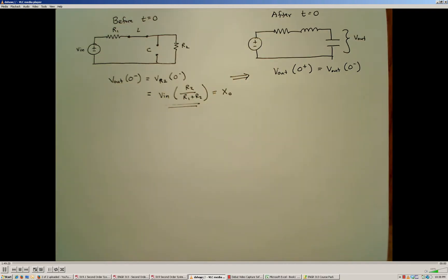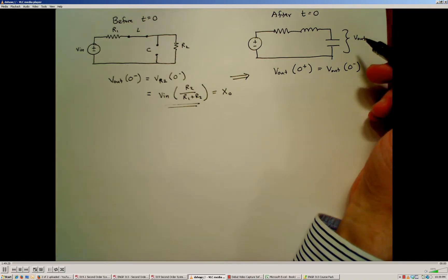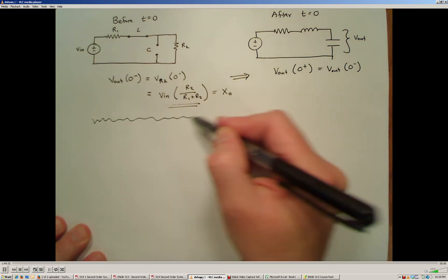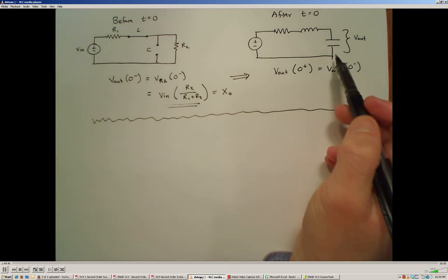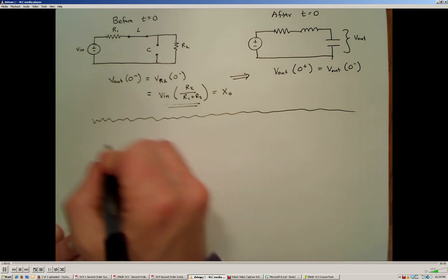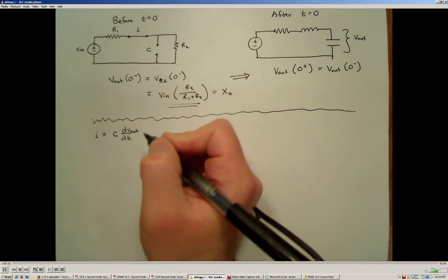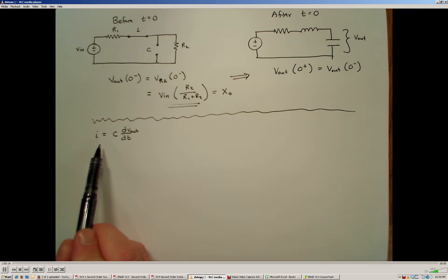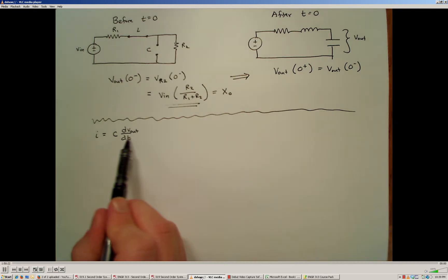Now we have to calculate the rate of change of voltage across the capacitor. This is always the tricky part — determining the derivative initial condition. We're looking for dVout/dt. From the properties of inductors and capacitors, the capacitor gives us the derivative relationship between voltage and current: I equals C times dV/dt. So if we can establish the current through the system and know what the current is at time zero right after we open the switch, we can calculate the rate of change of the output voltage at time zero.